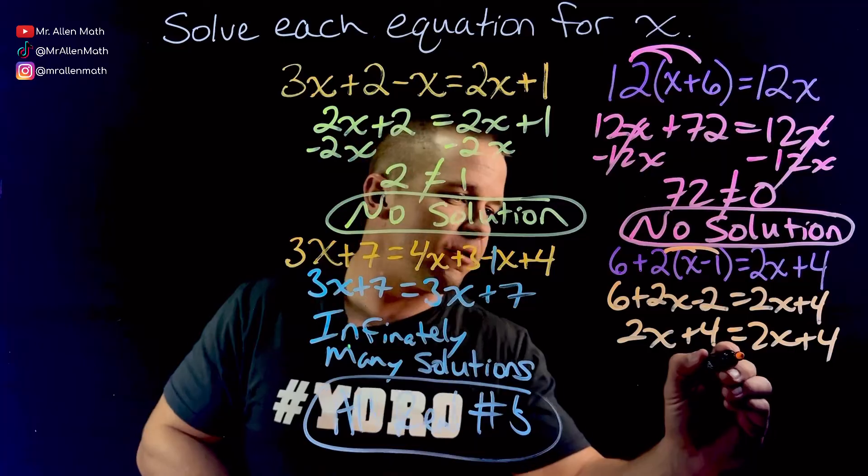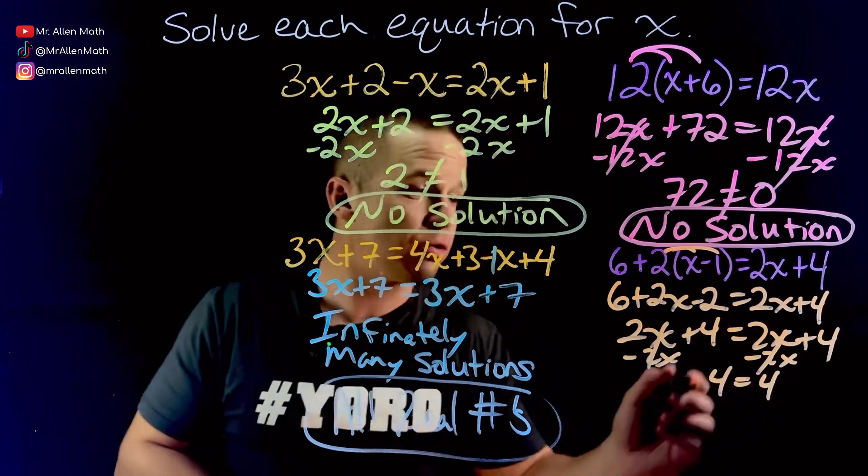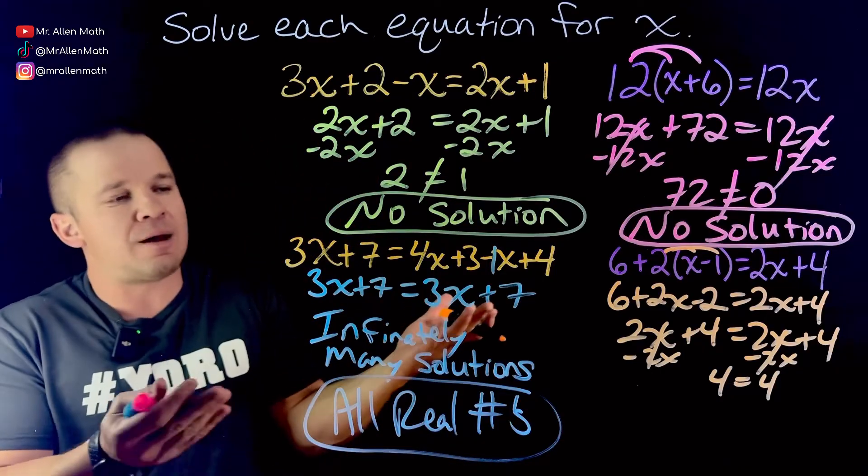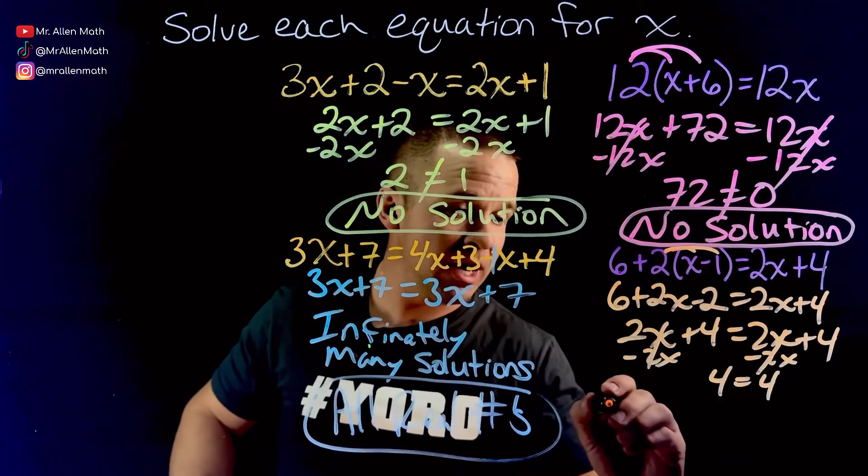Now if you wanted to go a little further here, and be like, oh, minus 2x, minus 2x. Look, they cancel, and 4 equals 4. It's a true statement. Personally, I would stop before that, but if your teacher wants you to go to this step, go for it.